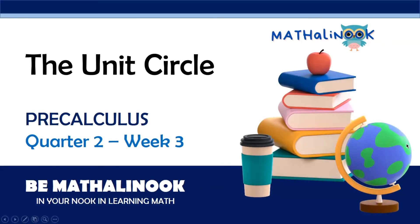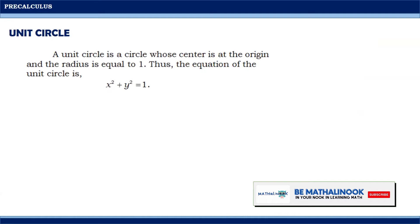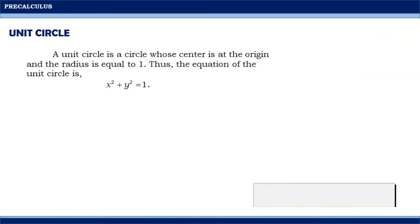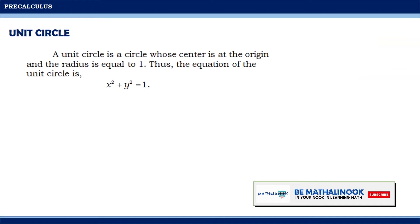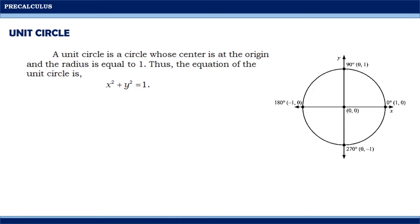Today, everyone, in this video, we will discuss about the unit circle. A unit circle is a circle whose center is at the origin and the radius is equal to 1. Thus, the equation of the unit circle is x squared plus y squared equals 1. This is the illustration of a unit circle. Notice that from the illustration, the center of the unit circle is at the origin and the radius is equal to 1 unit.